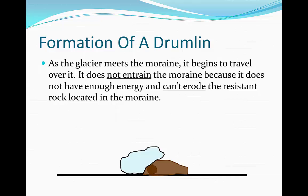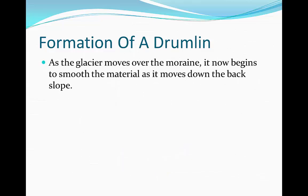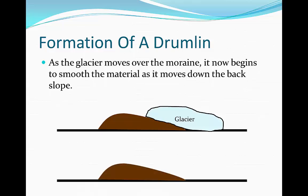Then, as the glacier moves over the moraine, it now begins to smooth the material as it moves down the back slope. As it does so, it's going to produce this nice lee slope as it moves downwards. It then produces this shape of the final moraine, which looks like a kind of half egg shape moving into the ground.